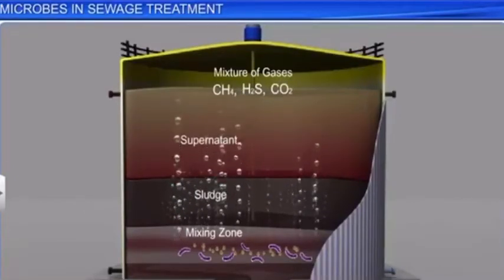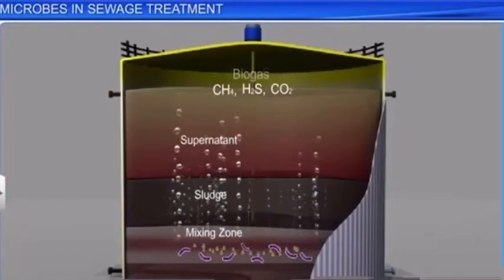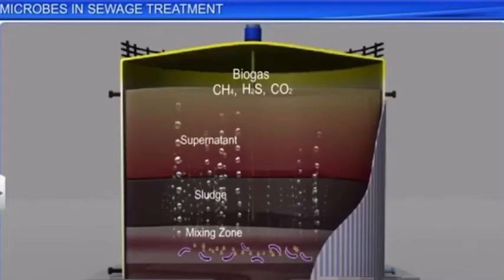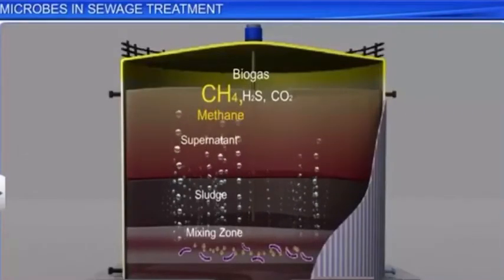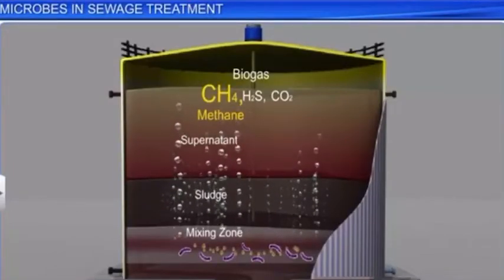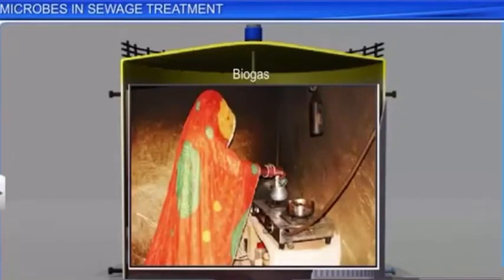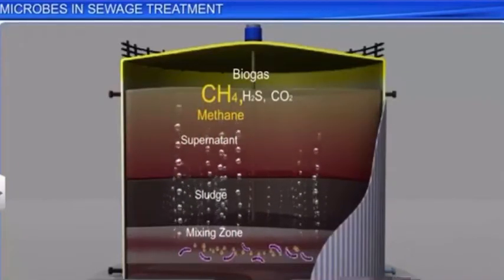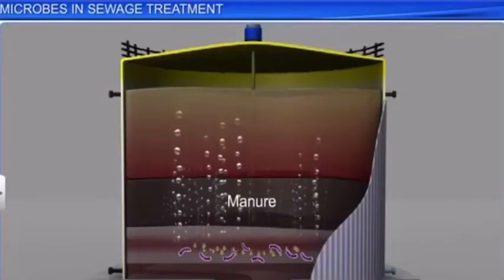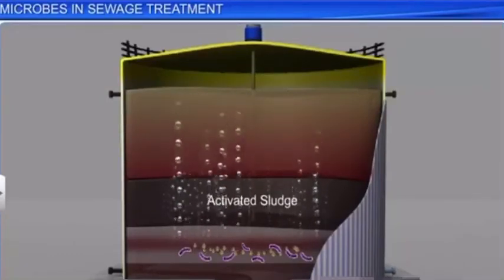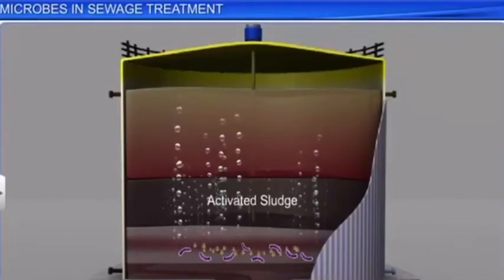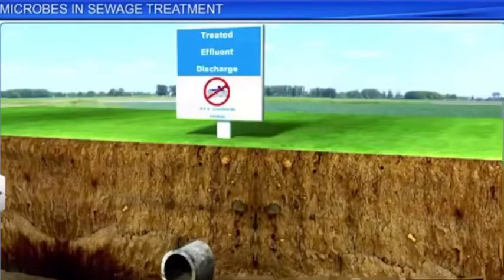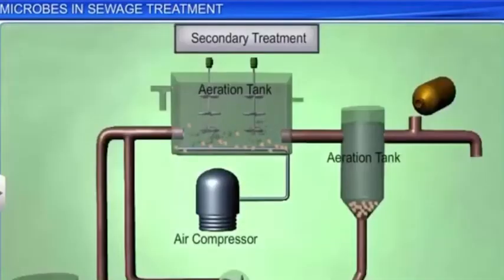This mixture of gases is also called biogas, and is used as fuel since it is inflammable. Methane is the main gas produced from sewage treatment and also serves as fuel; it is used to produce heat in homes and factories. The sludge left after digestion of both aerobic and anaerobic bacteria is used as manure. The effluents that remain from the secondary treatment plant are now fit to be released into natural water bodies like rivers and streams. However, a small part of the activated sludge is pumped back into the aeration tank to serve as inoculum for subsequent treatments.